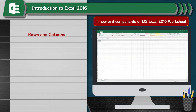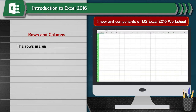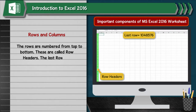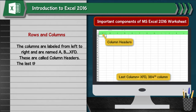Rows and Columns: A worksheet of Excel 2016 is made up of millions of rows and thousands of columns. The rows are numbered from top to bottom and are called row headers. The last row of the worksheet is row 1,048,576. The columns are labeled from left to right, named A, B through XFD. These are called column headers. The last column of the worksheet is XFD, the 16,384th column.